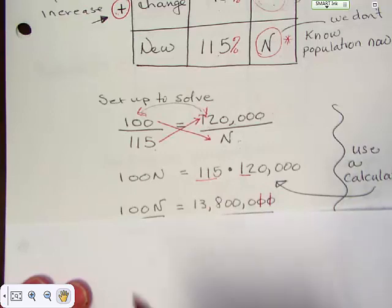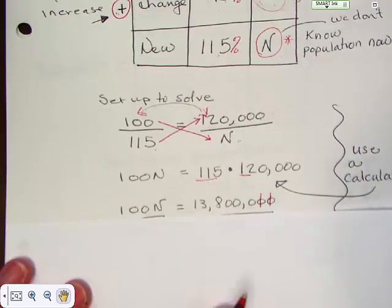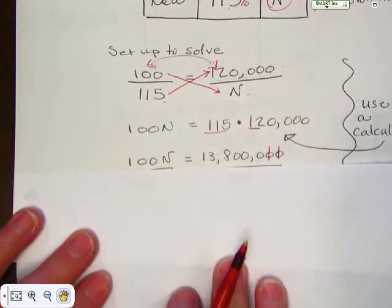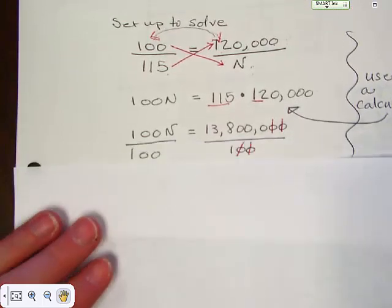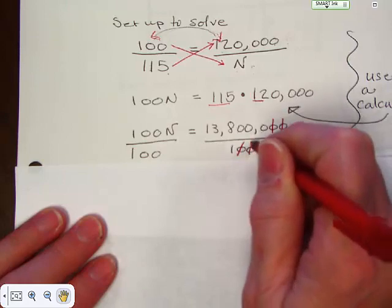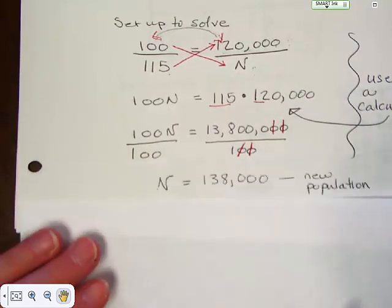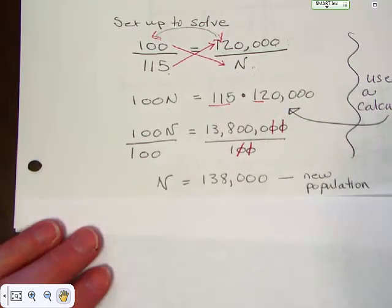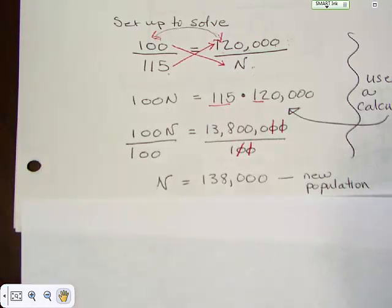When you do that you're going to end up with thirteen million eight hundred thousand, which is a lot. But you have to divide it by a hundred because you got to get N by itself. So when you do divide by a hundred you can just cross off these last two numbers.